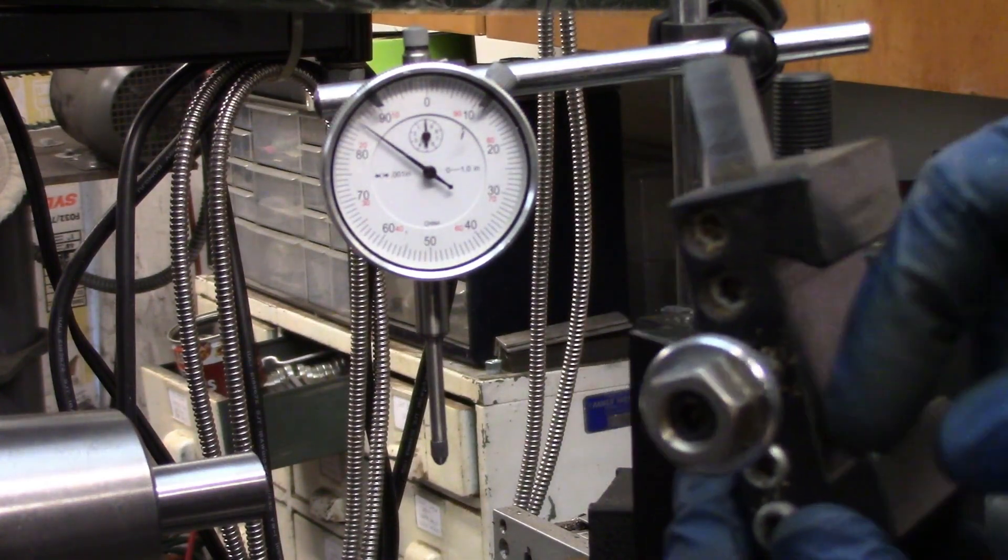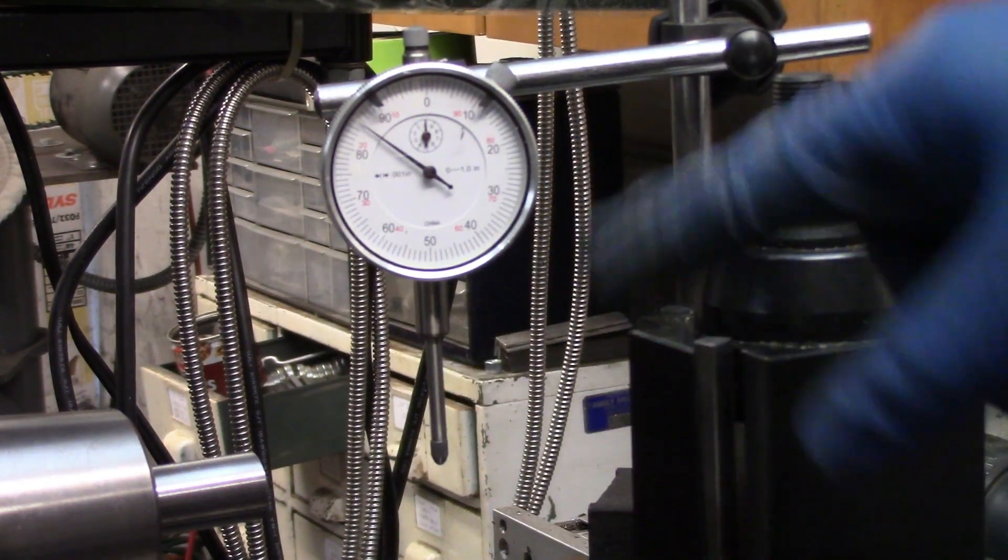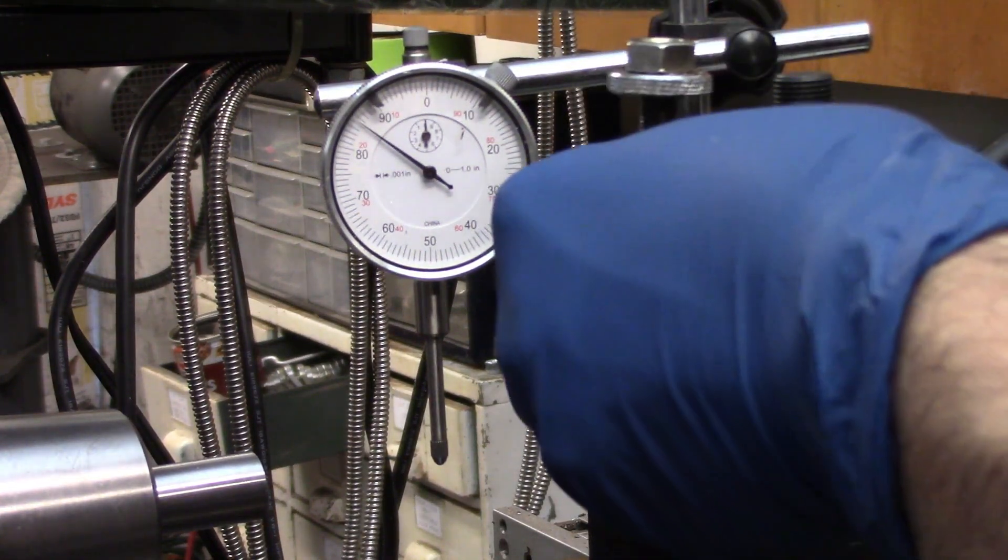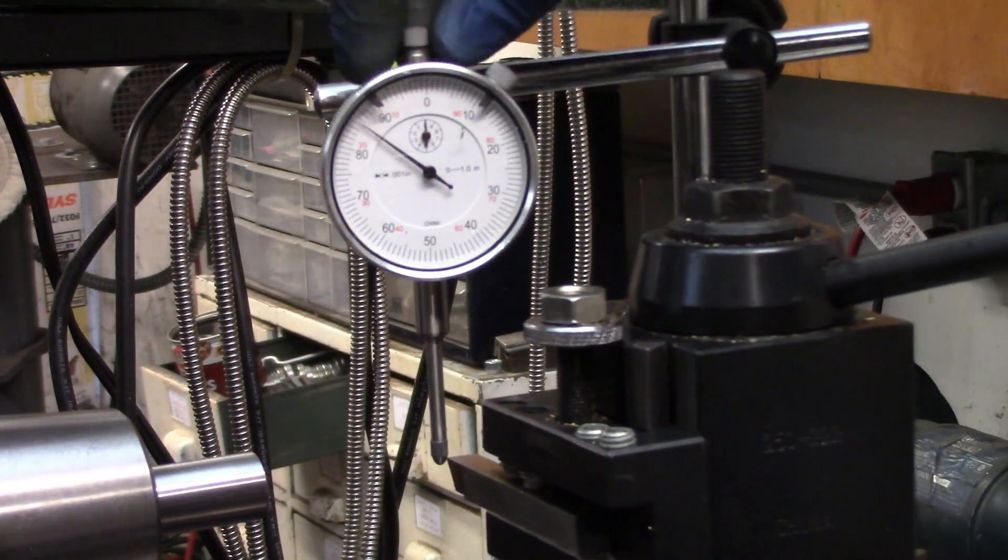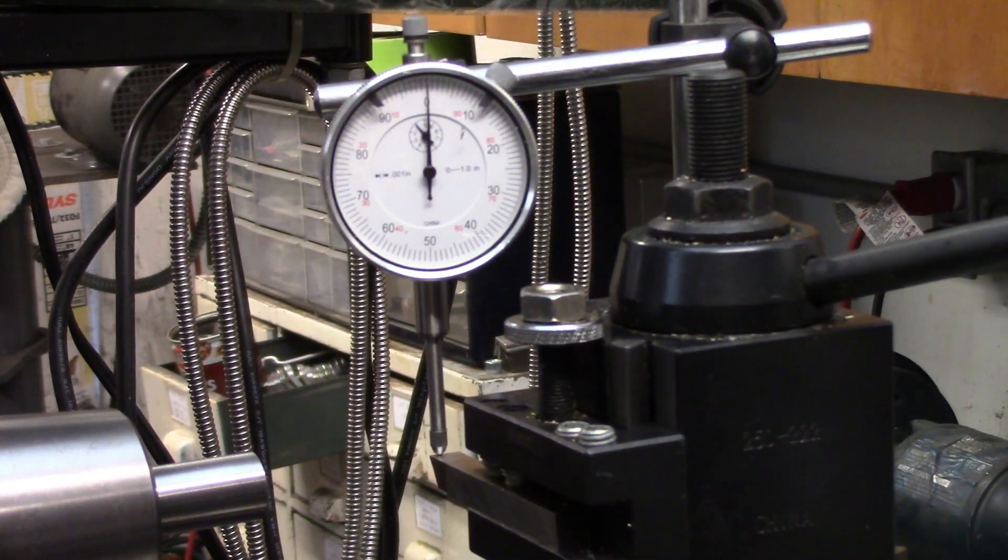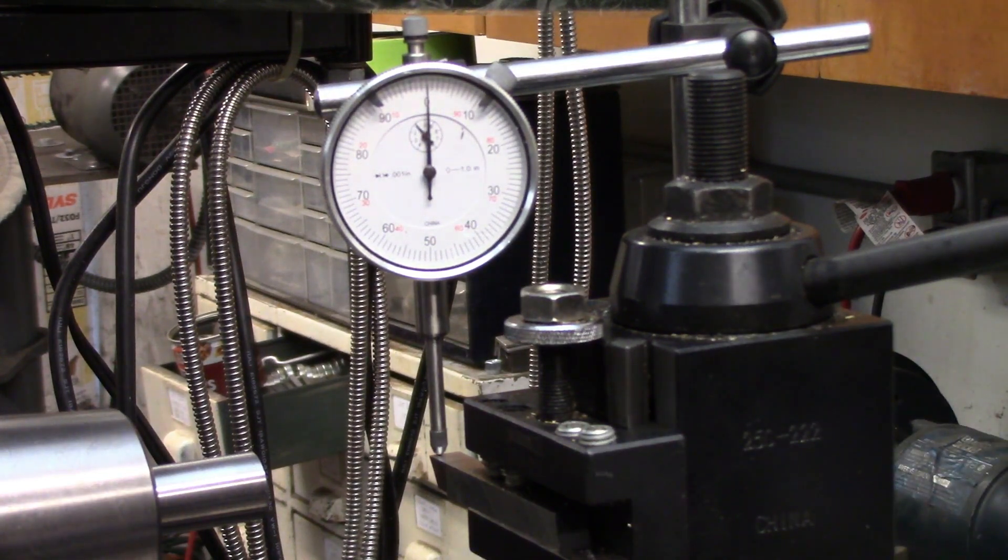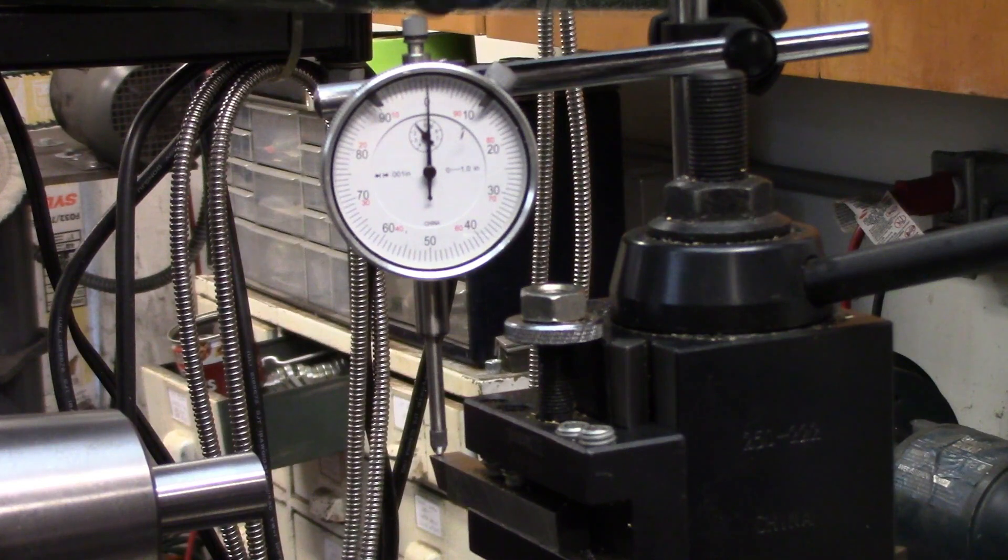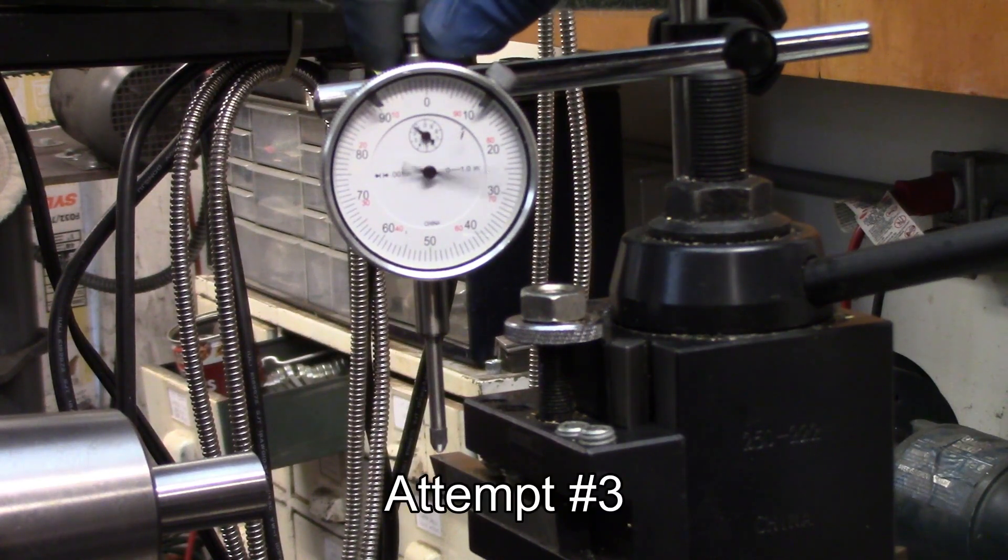I have made sure that all of the surfaces of the dovetails are nice and clean as well as the top of the tool post. I don't want to introduce any possible errors that way. All right, and we're right back on zero, maybe a smidge higher, maybe a tenth or two. This is a thousandths indicator, by the way. All right, here's attempt number three.